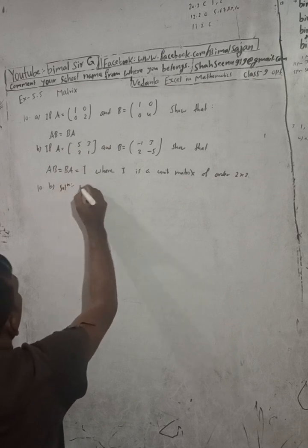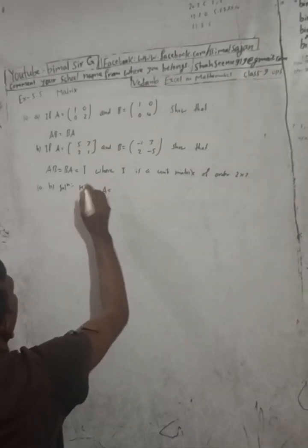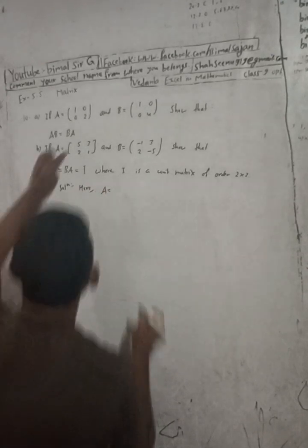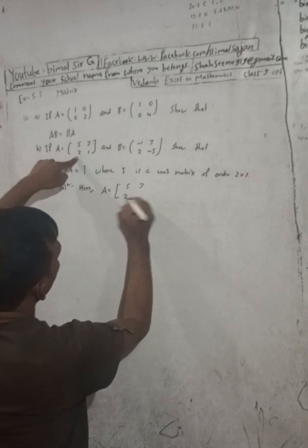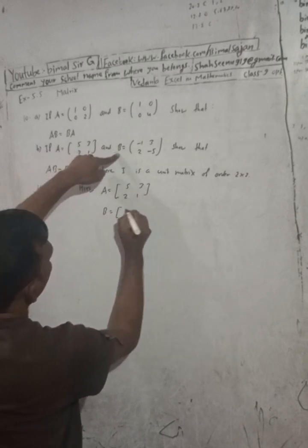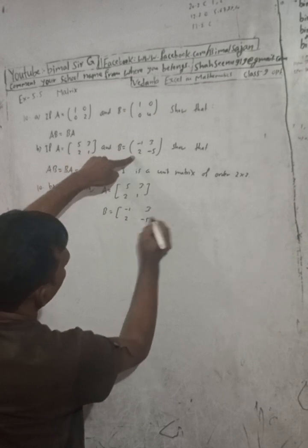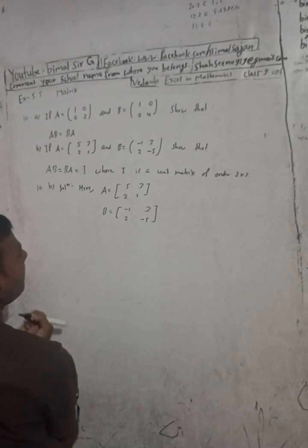Given: A is equal to [5, 3; 2, 1] and B is equal to [-1, 3; 2, -5].